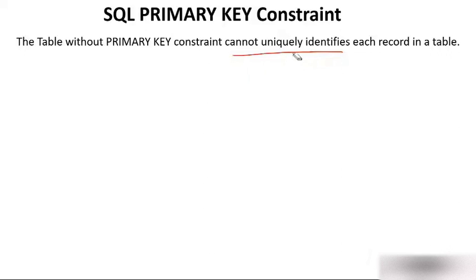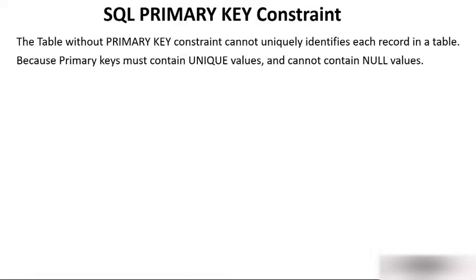Similarly, mobile numbers are unique for everybody, and SSN numbers are unique for everybody — these are examples of values which can be keys. But if a table is without a primary key, you cannot uniquely identify records. The primary key must be unique and cannot contain null values.